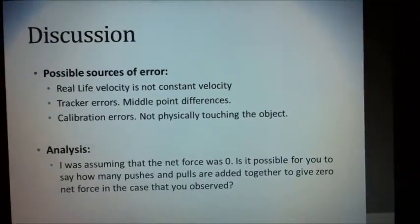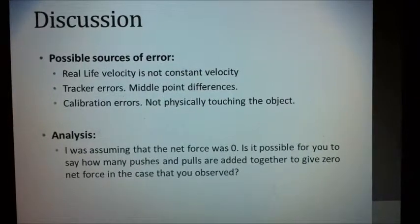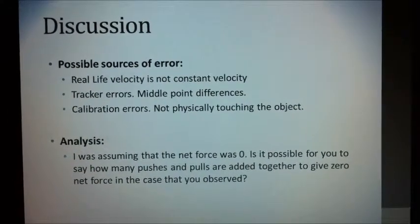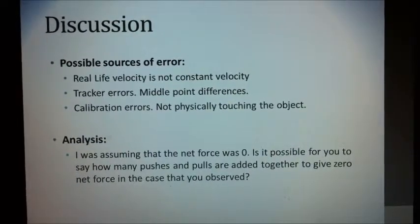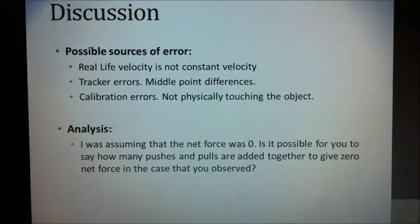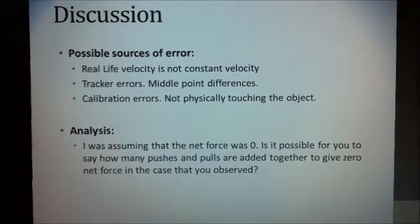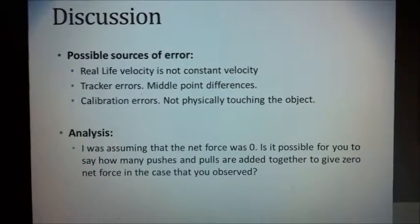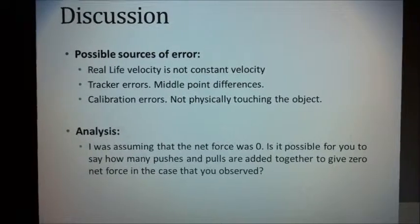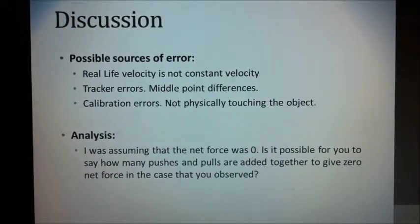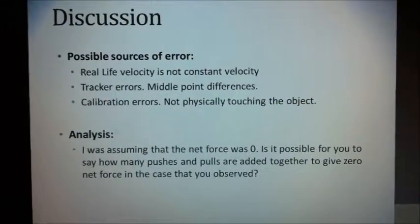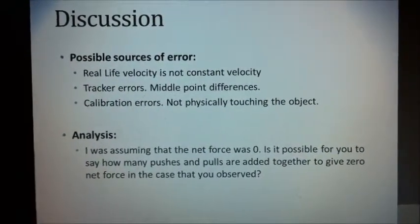Because the graphs differed, there are several possible sources of error. For one, real life velocity is not constant velocity. I was simply assuming that the car was traveling at constant velocity. However, it is very possible that it might have been slightly speeding up. Secondly, there might have been some tracker errors. Because it is almost impossible to tell the exact middle of an object, there might have been some differences between each point. Also, because I was not filming on a high-definition camera, the object might have been changing its shape.